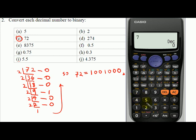If I want to convert this to binary, I press bin. I get 1001000. If I want to convert them to hexadecimal number, I press hex.